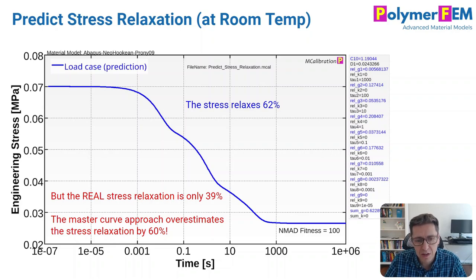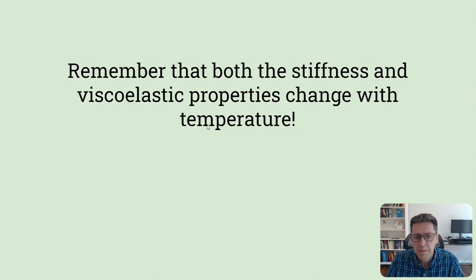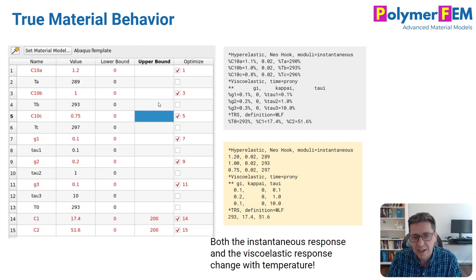So how do I know all this? Let's take a look at what's going on here. What we're doing is we're using a linear viscoelastic material. And a linear viscoelastic material requires two things. It requires a stiffness, in this case I'm using a hyperelastic model, and it requires a Prony series. Both the hyperelastic response and the Prony series can depend on temperature. And a lot of people forget that the stiffness response also depends on temperature.